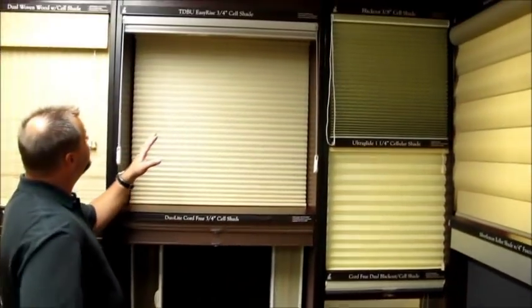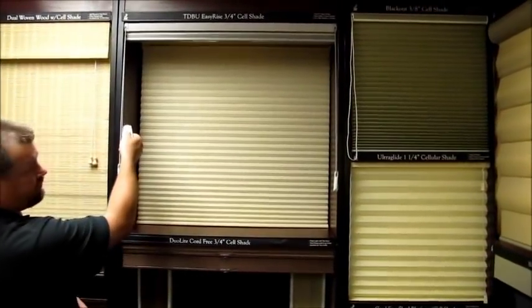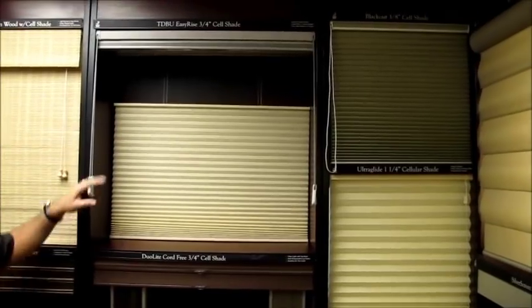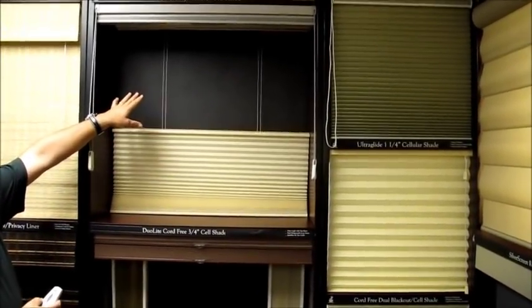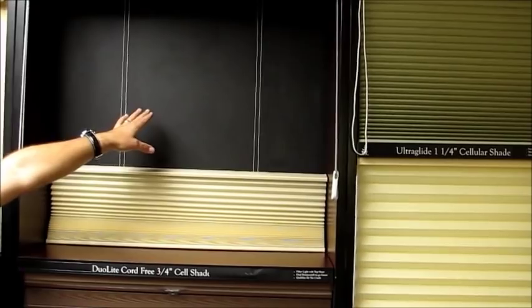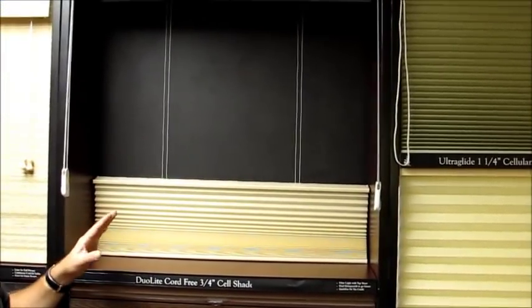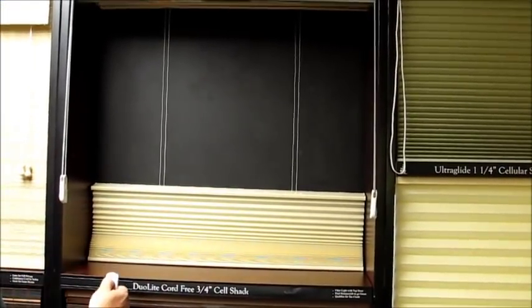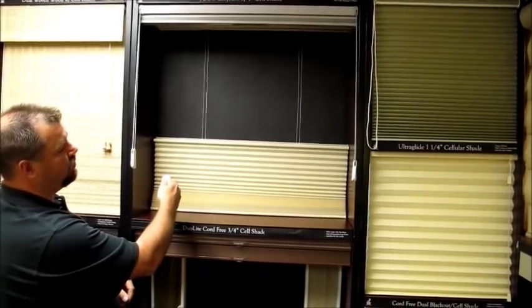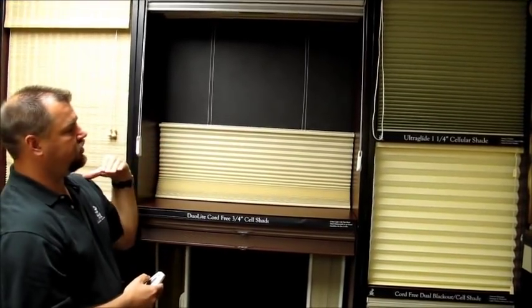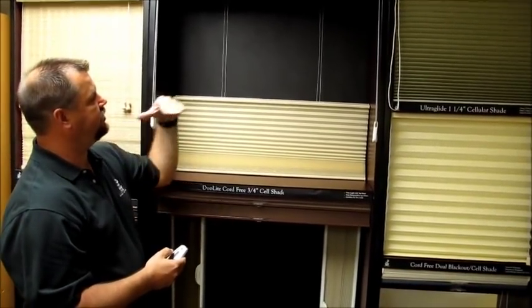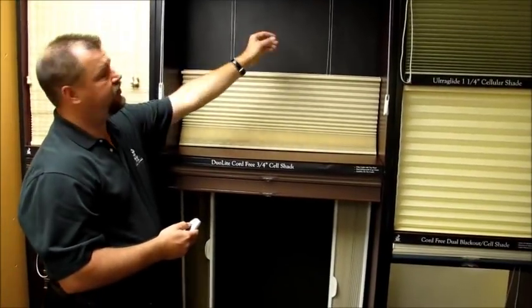Another great option is a motorized cell shade. Here, what you've got is a battery pack or hard-wired system that allows you to operate the shade. In this case, we've got top-down, bottom-up. This is a very nice feature because here, you can choose what privacy level you want. You put the shade to about shoulder height. It keeps most of your privacy in your room, but allows you to see out of your view.